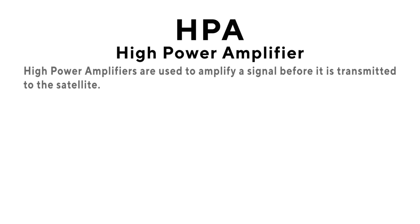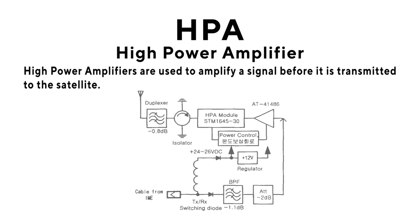HPA: High Power Amplifier. High Power Amplifiers are used to amplify a signal before it is transmitted to the satellite.